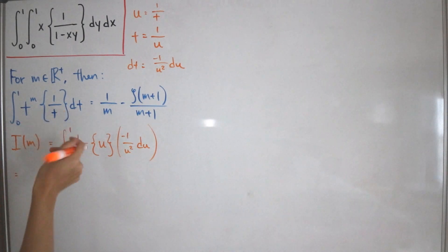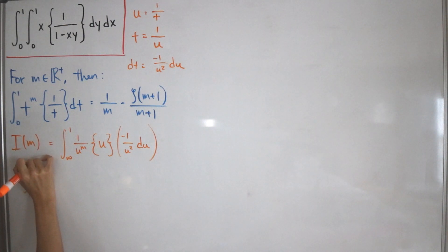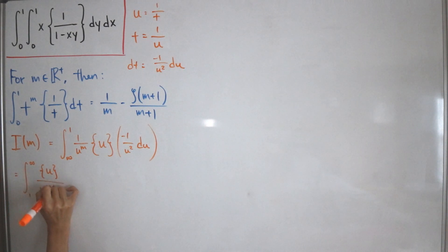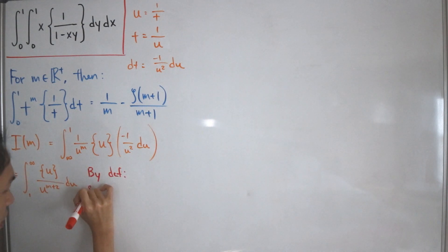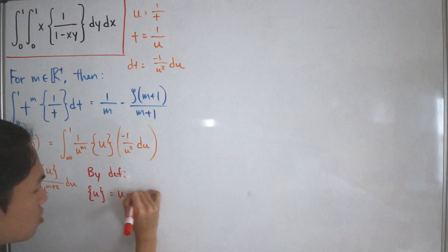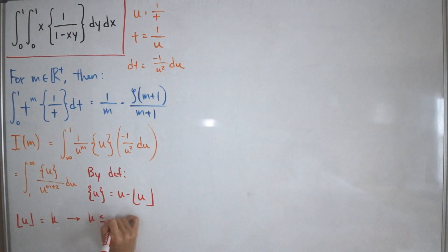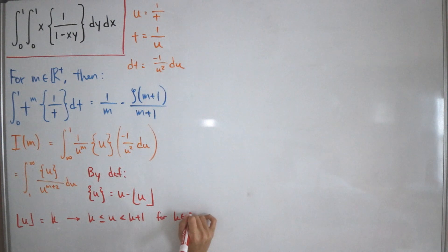Fixing the bounds and the negative sign by swapping limits, the integral becomes the integral from 1 to infinity of the fractional part of u divided by u^(m+2) du. By definition, the fractional part of u equals u minus the floor of u, where the floor of u equals k such that k ≤ u < k+1 for some integer k.